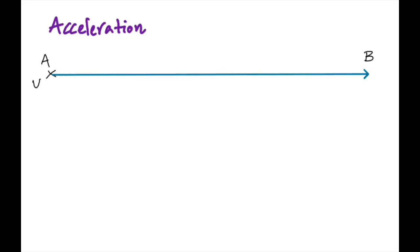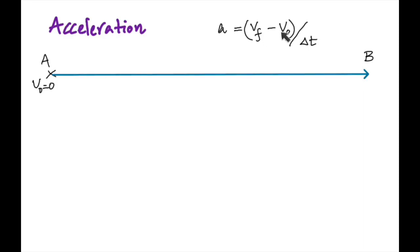Acceleration is change in velocity divided by change in time. An object started from rest, so the initial velocity is zero. The formula is change in velocity divided by change in time — that's (vf − v₀) divided by t. I'm giving you the final velocity as 10 meters per second and the time as 20 seconds. Find the acceleration.